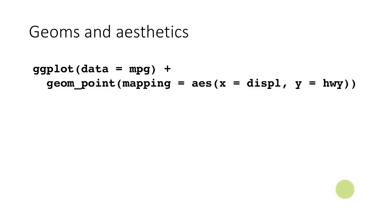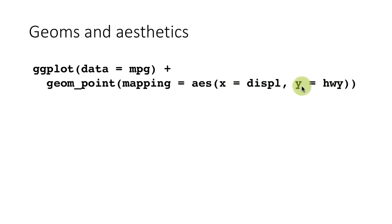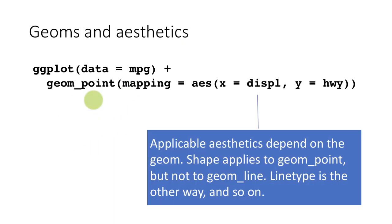That was the code that generated our scatter plot. Within geom_point, we mapped various things. Mapping basically maps aspects of the data to aspects of the display. Here we are saying displacement should go on the x-axis and highway mileage should go on the y-axis. Displacement and highway are part of the data; x-axis and y-axis are part of the plot. That's why it's called a mapping — you are mapping between the data and geometric elements of the plot.